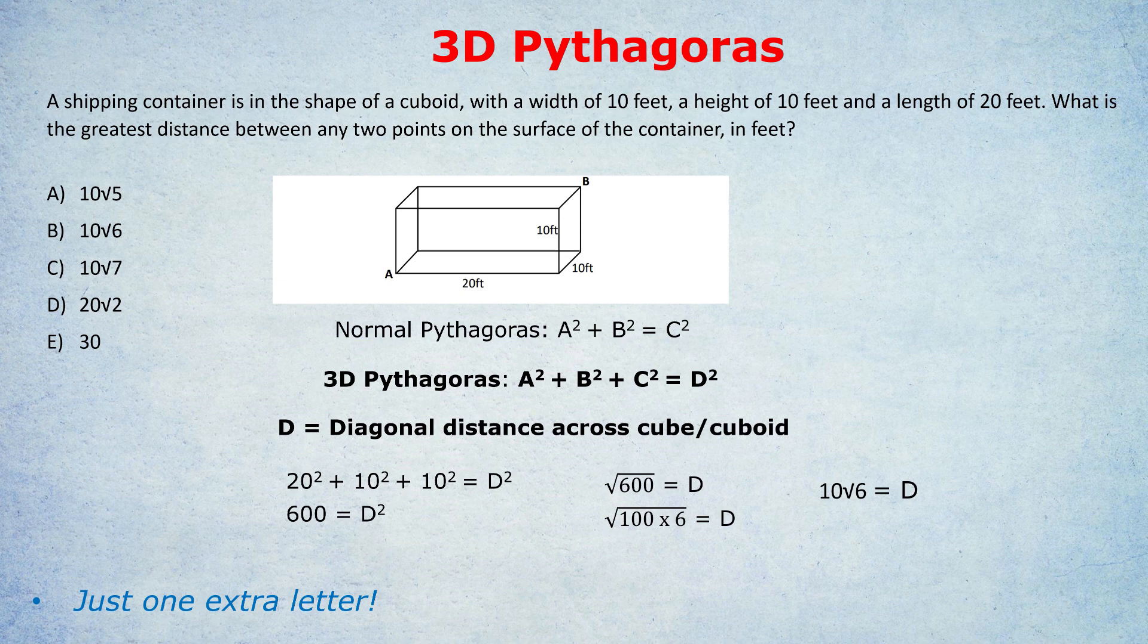Either way, using this three-dimensional Pythagorean formula, we have worked out the three-dimensional diagonal. We've worked out the D. In other words, we've answered the question, we've found the greatest distance between any two points on the surface of the container is 10 root 6. Answer B. At this point, you might be thinking, amazing trick, but I think I get it now, don't really need to learn any more.